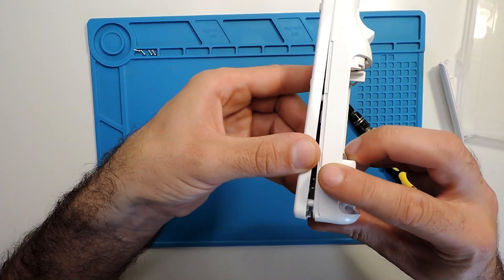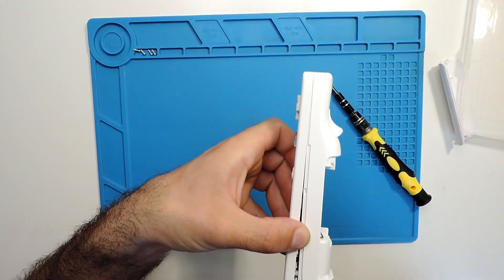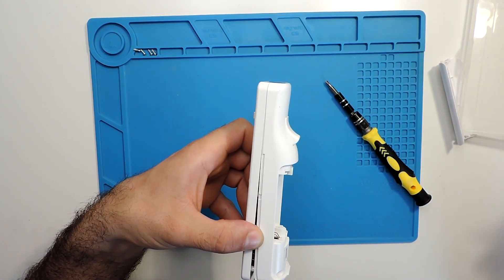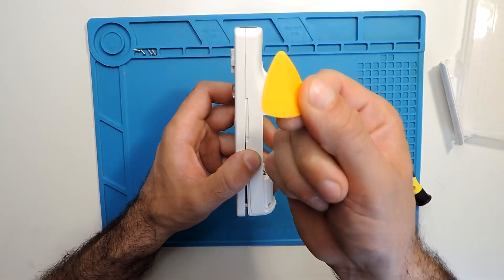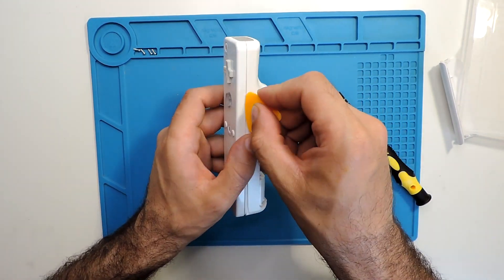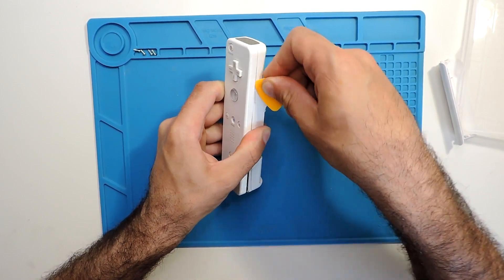You can see it already starts to open, but in the front there are some hinges, so you need to split them apart. Just use a pry card and press it underneath.